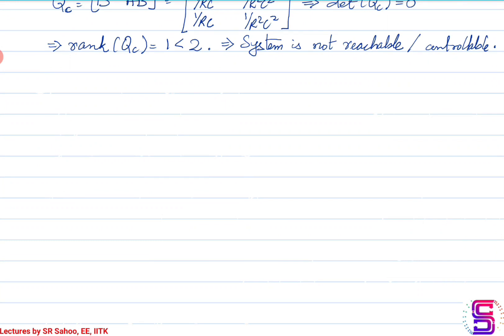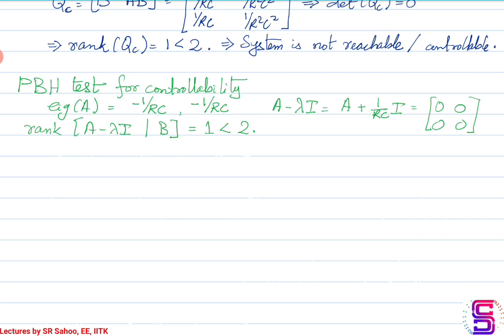Controllability can also be checked using the PBH test or eigenvalue-based test. The eigenvalues of A turn out to be -1/RC, repeated twice. So A minus lambda·I is the zero matrix. The rank of the augmented matrix [A - lambda·I, B] is 1 for both eigenvalues, which is less than the full rank of 2 — the order of the system — thus indicating the system is not controllable.